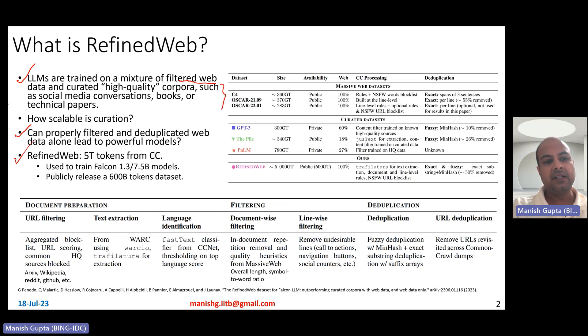To answer that question, folks basically created this dataset called RefinedWeb. It consists of 5 trillion tokens that have been obtained from Common Crawl corpus. This dataset has been used to train Falcon 1.3 and 7.5 billion models, which are results for which have been presented in this paper. However, this dataset along with other curated datasets have also been used to train 7 billion and 40 billion Falcon models, which basically are at the top right now on the open LLM HuggingFace leaderboard. A small part of this dataset, 600 billion token dataset, has also been publicly made available as part of HuggingFace.